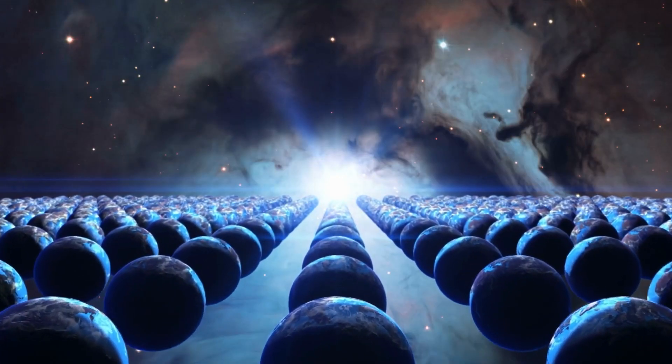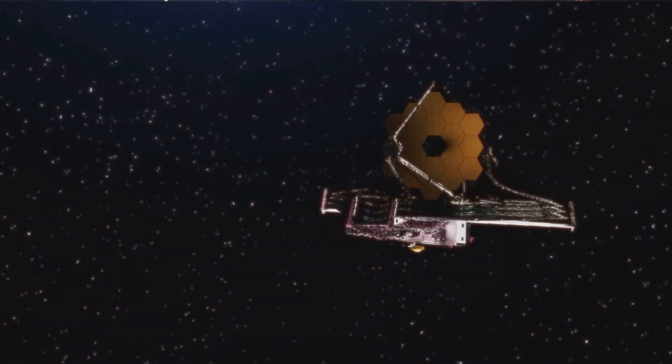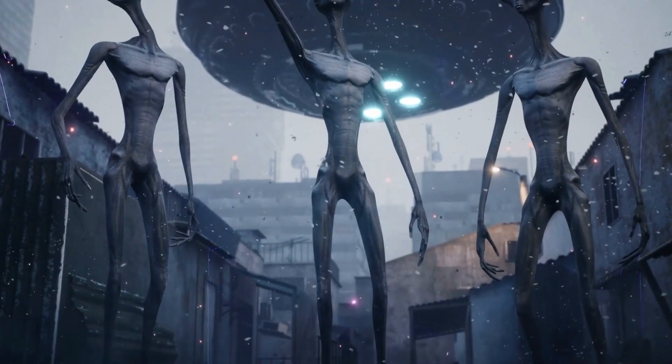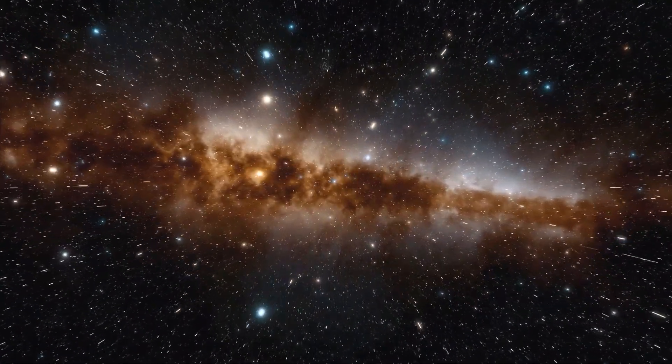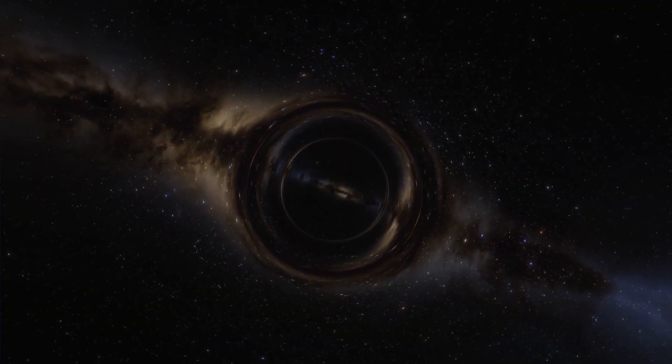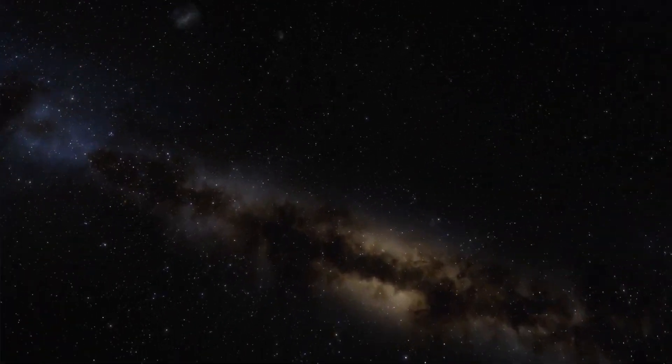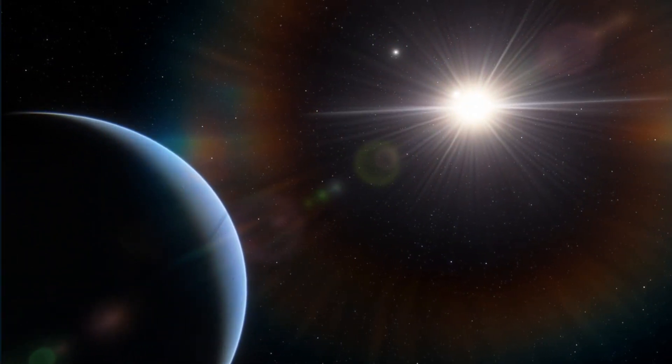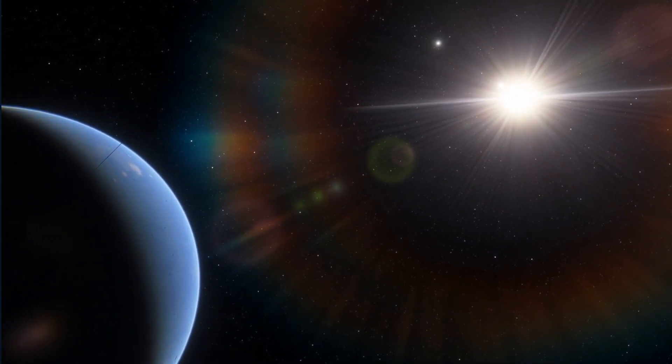As the scientific community eagerly awaits further revelations, Eliza Kempton highlights the significance of the James Webb Space Telescope in expanding our knowledge of planets within this size range. By observing other celestial bodies of similar proportions, scientists will discern whether GJ-1214b is an anomaly or a representative exemplar of its class. The telescope's future observations promise to unravel the mystery surrounding these intriguing worlds, enriching our understanding of the diverse planets that populate our galaxy. With each groundbreaking discovery, the enigma of GJ-1214b unravels further, propelling us closer to deciphering its true nature.